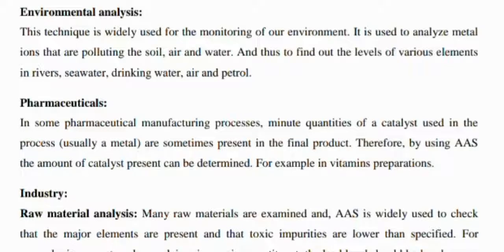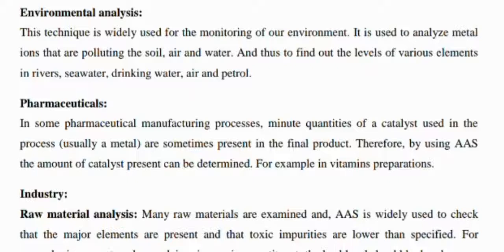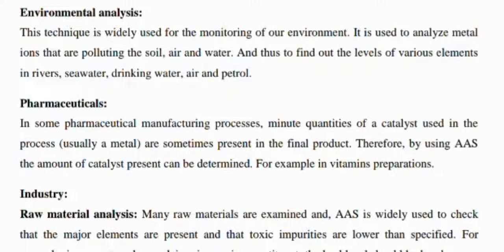In the pharmaceutical industry, minute quantities of a catalyst used in manufacturing processes may sometimes be present in final products. By using atomic absorption spectroscopy, the amount of catalyst present can be determined — for example, in vitamin preparations. In industry, many raw materials are examined and atomic absorption spectroscopy is widely used to check that major elements are present and toxic impurities are lower than specified — for example, in concrete where calcium is the major constituent, certain toxic elements should be kept low.